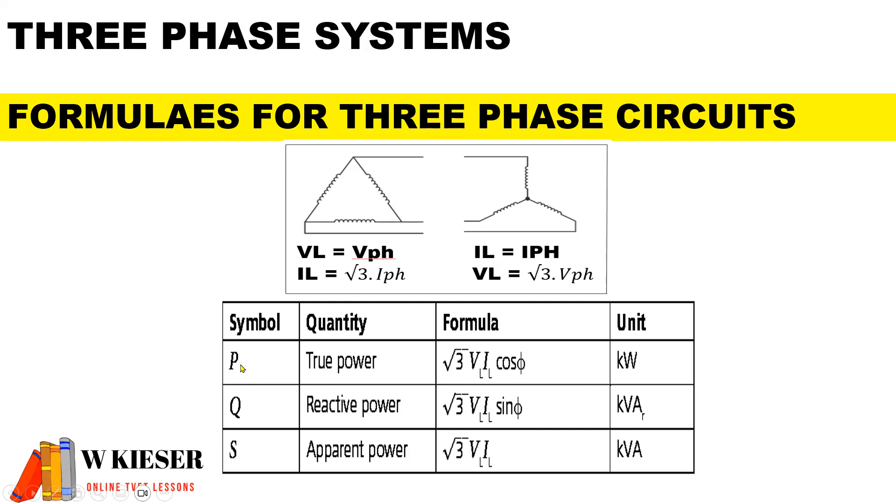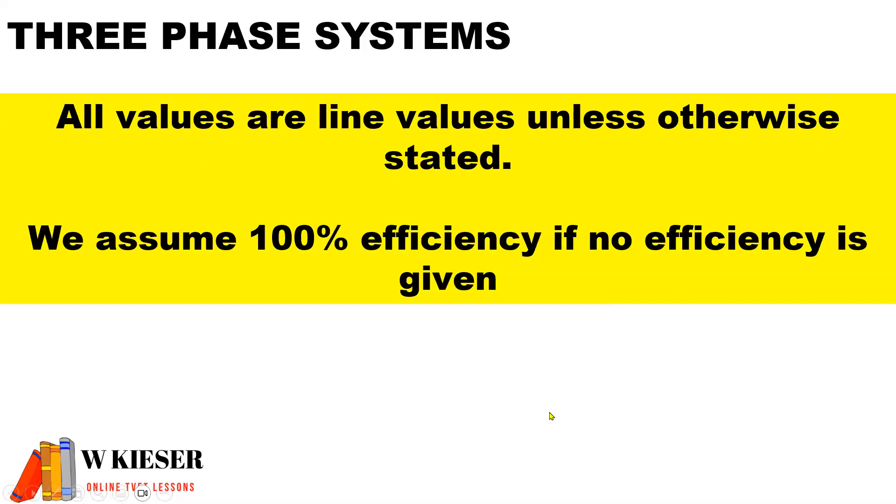We have our symbols: true power, reactive power, and apparent power. For true power we multiply by the power factor. And for reactive power we multiply by sine theta. All values are line values unless otherwise stated and we assume 100% efficiency if no efficiency is given.